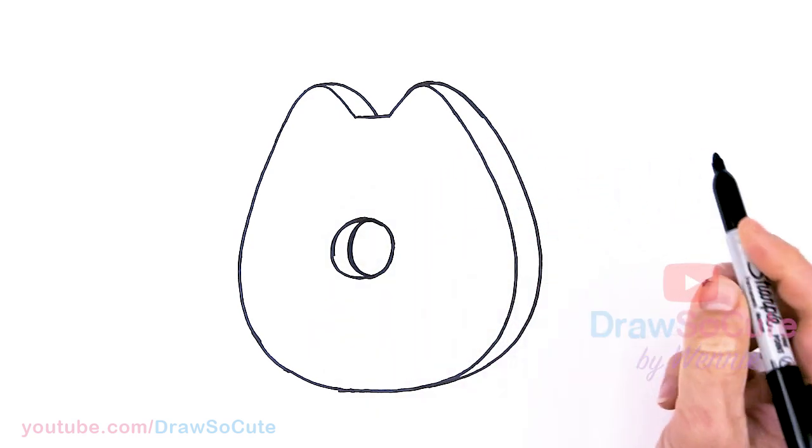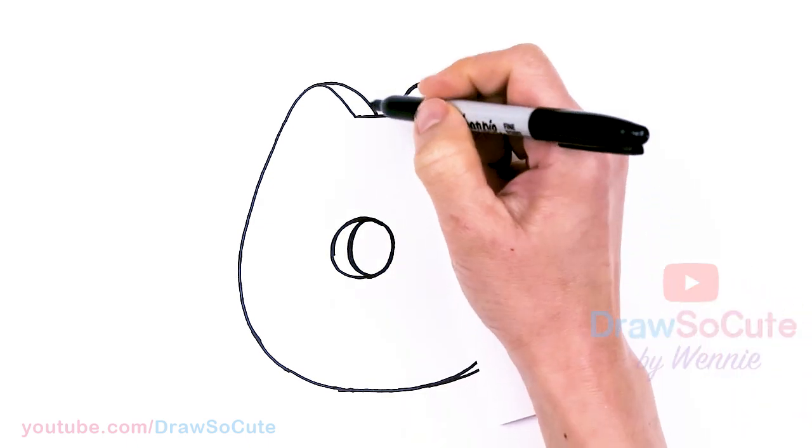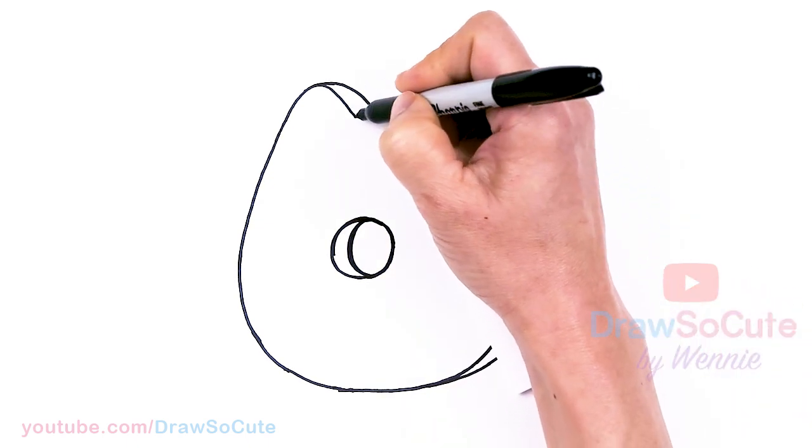Okay. So now that we have that, it's a doughnut now officially. Okay. So then let's come back in here and make it look like Pusheen. So let's come in here with three stripes, right at the top.